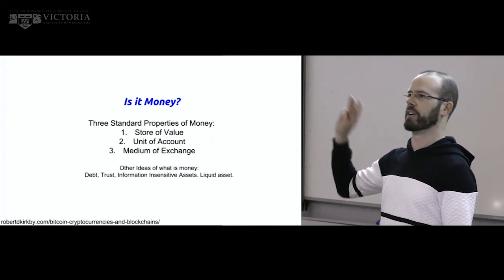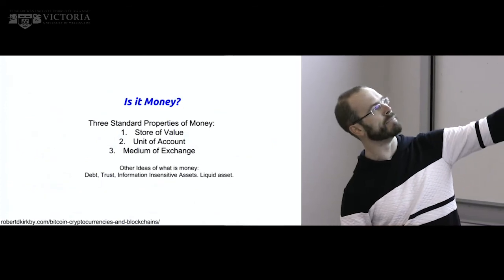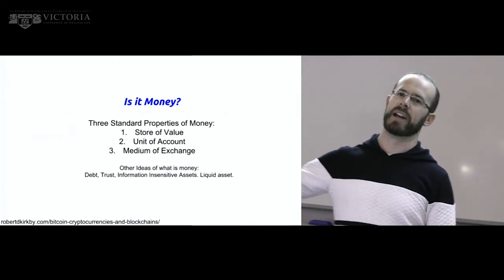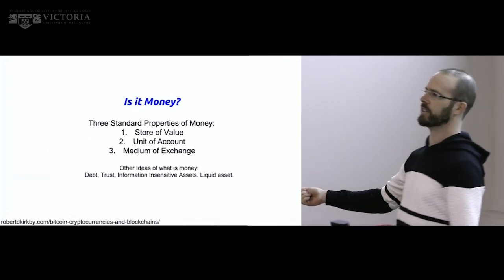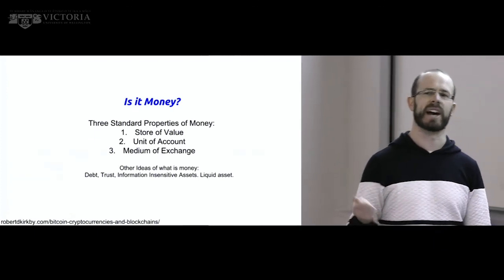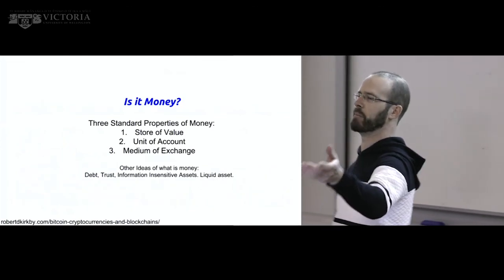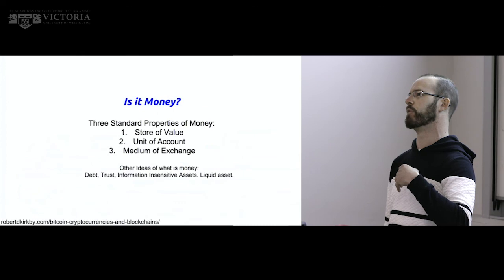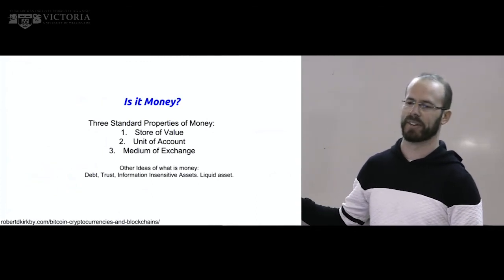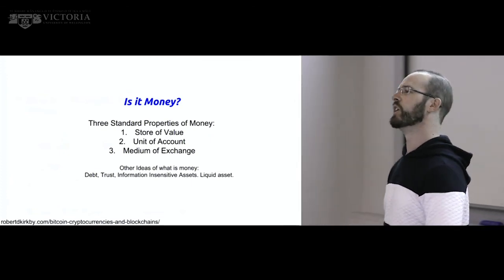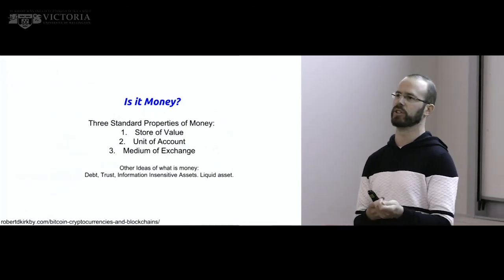Is Bitcoin — and cryptocurrencies in general — money? There are three main ideas of what makes good money. First, store of value: if I have a hundred dollars this year, it's still worth a hundred dollars next year. Second, unit of account: if I ask you the price of something, you tell me in dollars, not in apples. Third, medium of exchange: if you and I want to make a transaction, we use New Zealand dollars — that's the first thing I reach for.